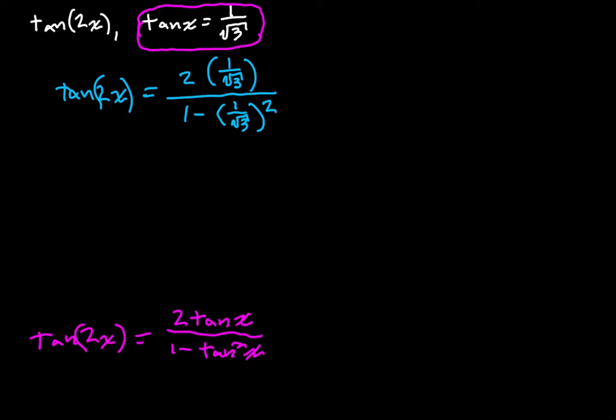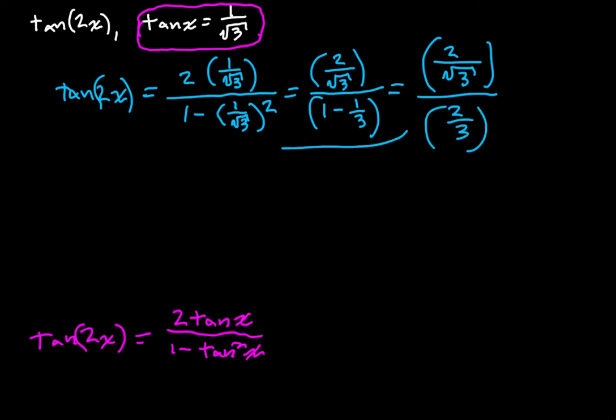So let's simplify this a little bit. We're going to have two over the square root of three divided by one minus one-third. So what's that going to give us? That's going to give us two over square root of three over, right, this is going to be two-thirds down here. Let's bring this down.